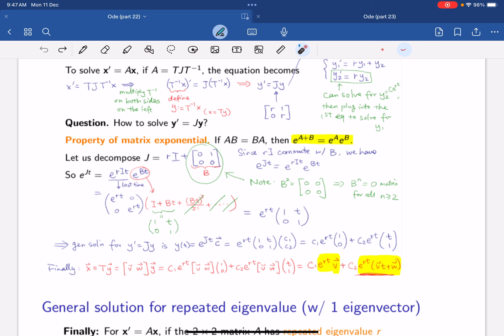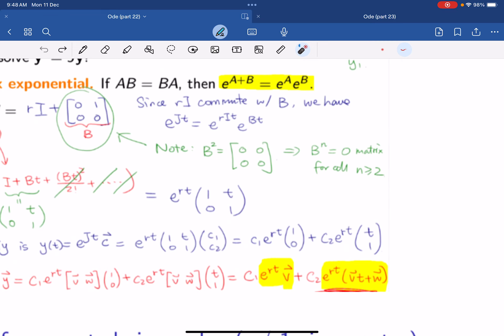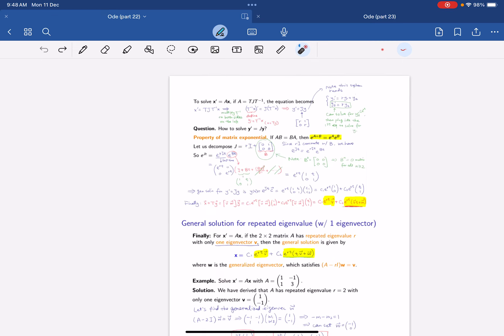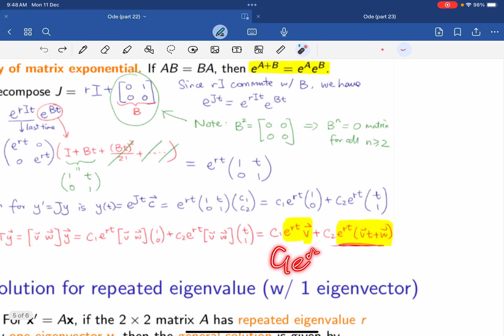And so the general solution of this is this solution. Now we can sub the e to the power of JT as this. Then you get the following result. And so finally, you just take T, x equals to Ty, you sub in, and you get this as the general solution. Hence, the general solution to this thing is C1 e^(Rt) times the eigenvector plus C2 e^(Rt) eigenvector times t plus W.